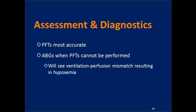Assessment for status asthmaticus requires a very thorough respiratory assessment: rate, depth, pattern, wheezing — where it is, which lobes, how profound and loud it is. In a stable situation, PFTs are the most accurate diagnostic test, giving a clear picture of lung function and response to bronchodilators. But in an acute situation with status asthmaticus, an ABG is indicated because it can be done rapidly and tells us about acid-base balance and ventilation-perfusion mismatch. In status asthmaticus you'll see very significant ABG shifts: poor oxygenation, hypoxemia, acidosis, and retention of CO2.